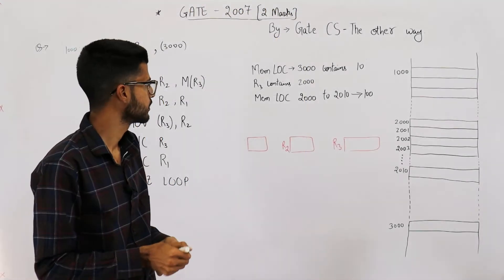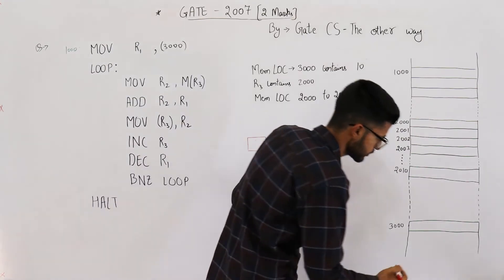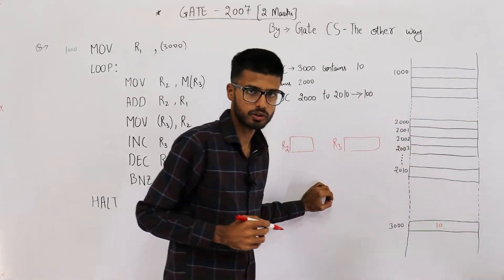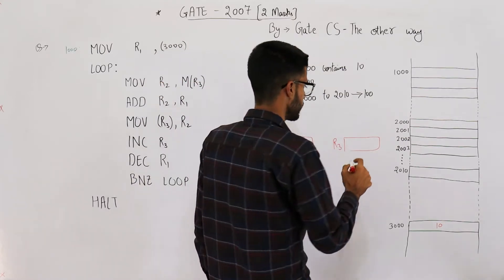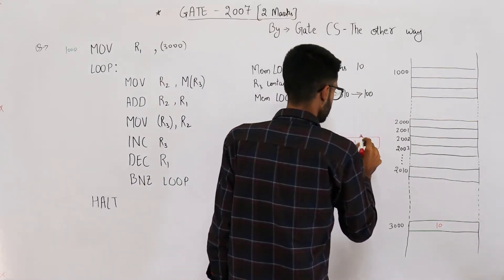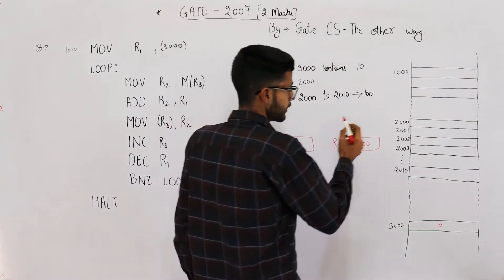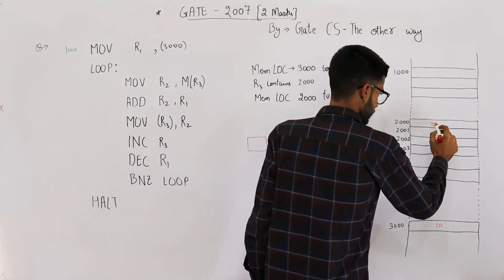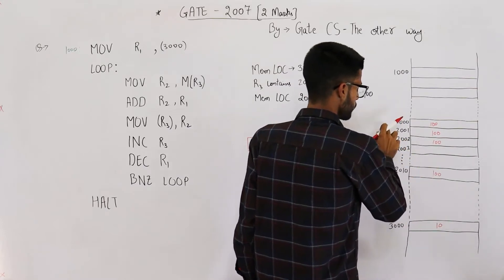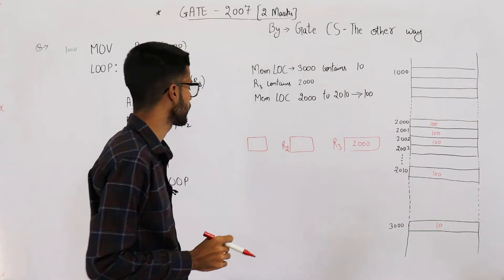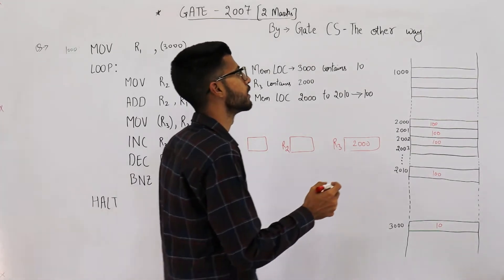So we are given these initial values: memory location 3000 contains 10, register r3 contains the initial value 2000, and memory locations 2000 to 2010 all contain the value 100. This code starts from address 1000.